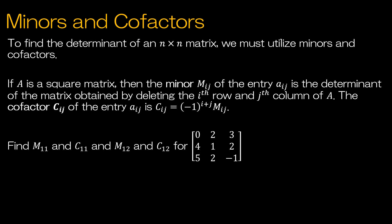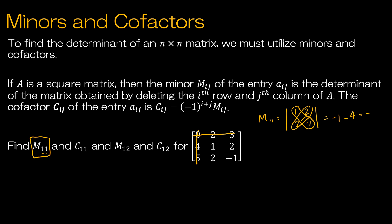The minor of some entry is the determinant of the matrix obtained by deleting the ith row and jth column. Let's talk about minor M(1,1): row 1, column 1 means I'm taking out row 1 and column 1. The minor M(1,1) is the determinant of the matrix left over: 1, 2, 2, negative 1. We know how to do this because it's a 2x2. So 1 times negative 1 is negative 1, minus 2 times 2 which is 4, giving me negative 5.